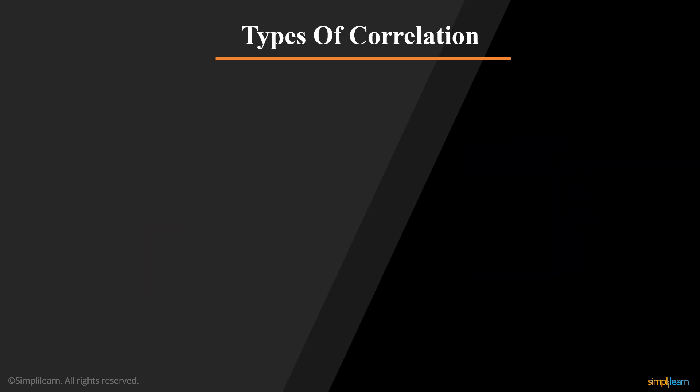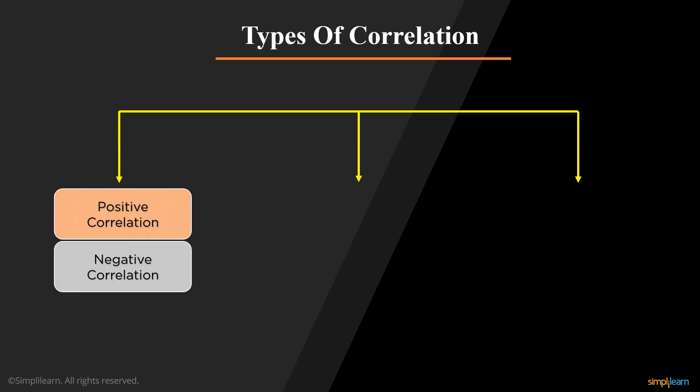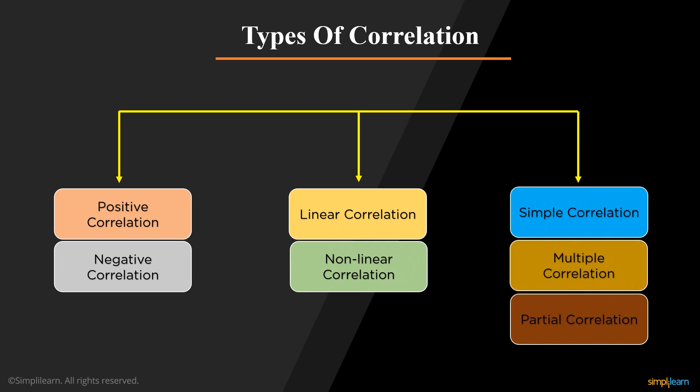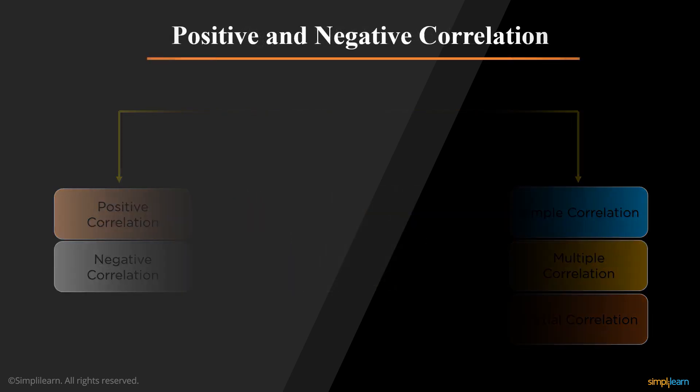Types of correlation. There are mainly three categories of correlation. The first one is positive and negative correlation. The second one is linear correlation and nonlinear correlation. And the third one is simple, multiple and partial correlation. Let's discuss positive and negative correlation.